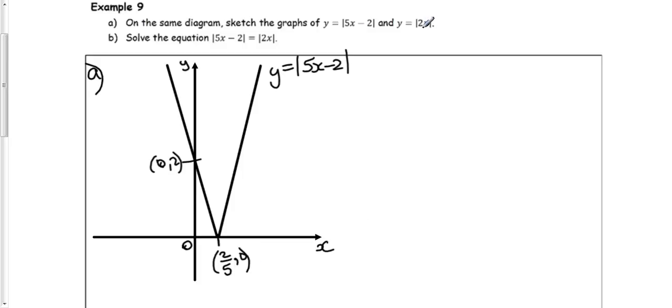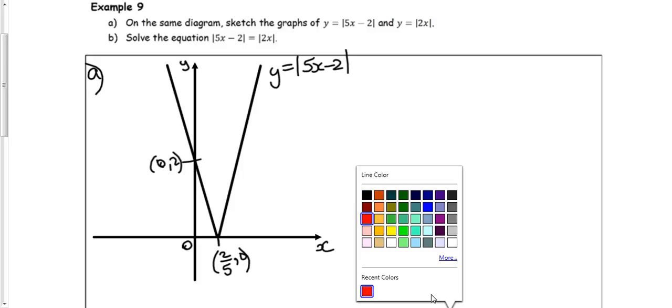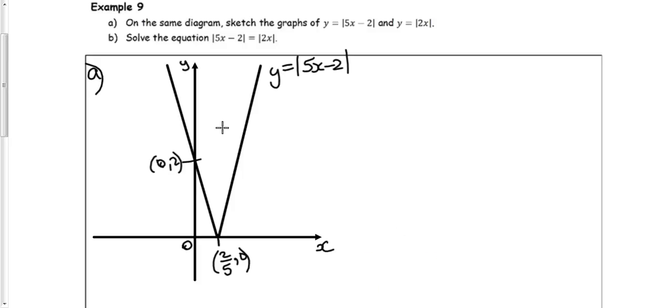The second graph, mod of 2x. I do need to consider which graph is going to be steeper. Let's think about mod 2x. The gradient is going to be 2. Whereas the original graph, the mod of 5x minus 2, has a gradient of 5. This one's not going to be as steep as the first one. The graph of y equals 2x, so it's not as steep as the graph I've already drawn.